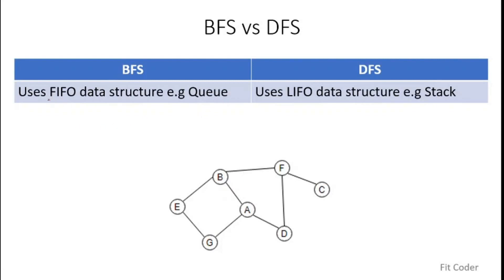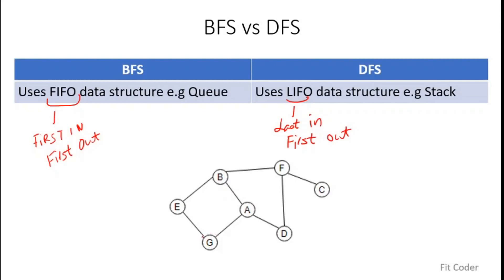A queue is a FIFO data structure — first in, first out — and a stack is LIFO — last in, first out. As per the property of BFS, we have to explore the graph layer wise. From A, we have to explore the nodes that are at the same distance from A: B, G, D first, then we explore the second layer. This property is in alignment with FIFO — whichever node we first insert in the queue, we pop it out first. So first we insert B, G, D, then we pop B, G, and D.